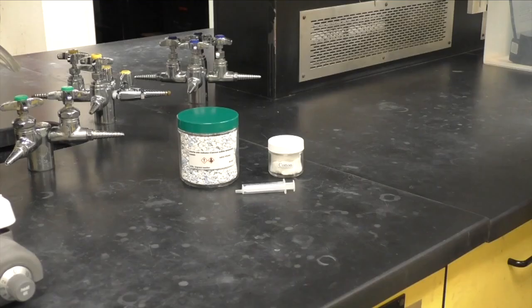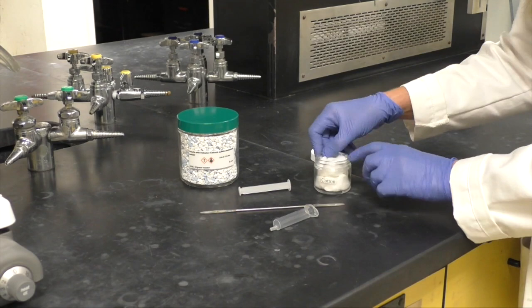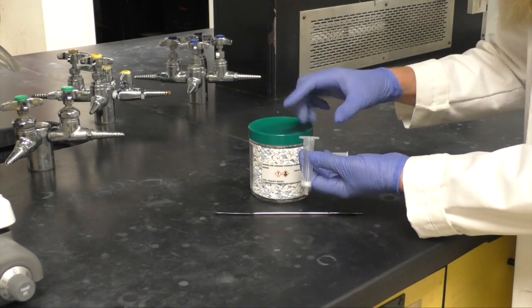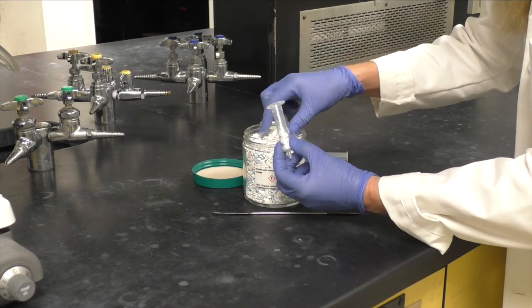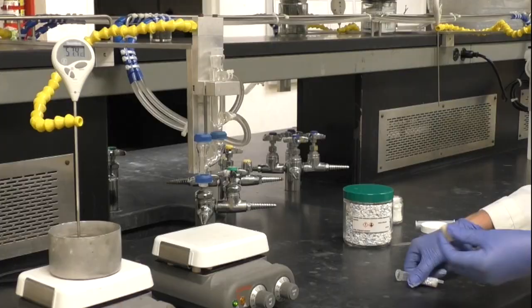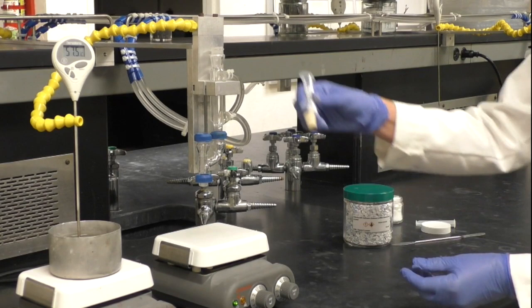Next, create a drying tube by removing the plunger from a 5 milliliter syringe. Place a small piece of cotton in the syringe, fill it with Drierite, and then top it off with another small piece of cotton. Add a cork with a hole drilled into it to the tip of the syringe and place the drying tube at the top of the condenser.